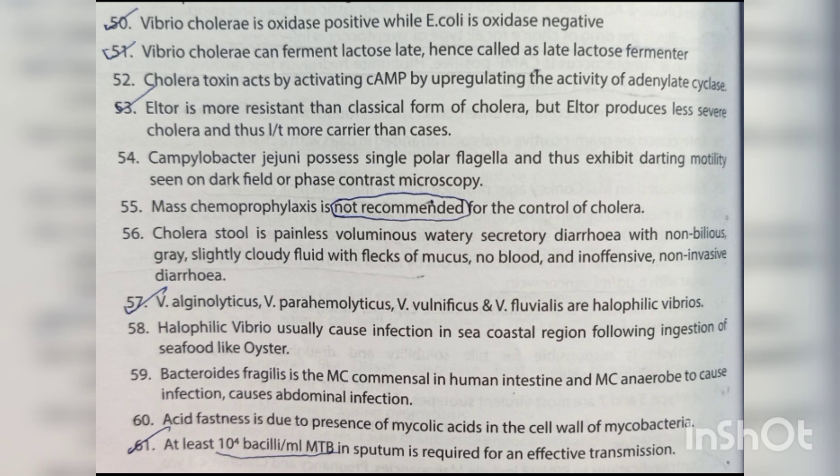Vibrio cholerae is oxidase positive while E. coli is oxidase negative. Vibrio cholerae can ferment lactose late, hence called a late lactose fermenter. Cholera toxin acts by activating cAMP by upregulating the activity of adenylate cyclase. El Tor is more resistant than the classical form of cholera, but produces less severe disease, leading to more carriers than cases. Campylobacter jejuni possesses a single polar flagella exhibiting darting motility seen on dark-field or phase contrast microscopy.